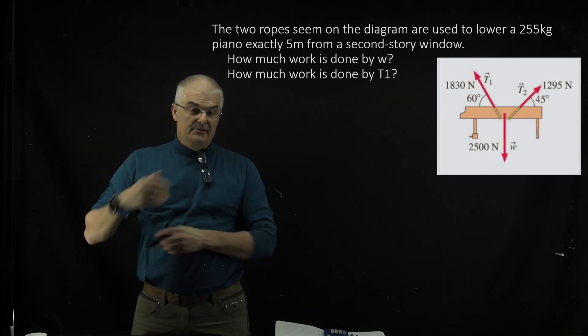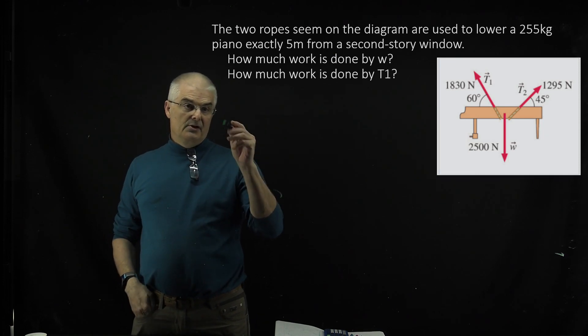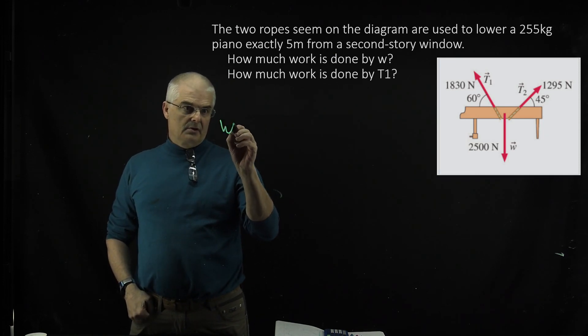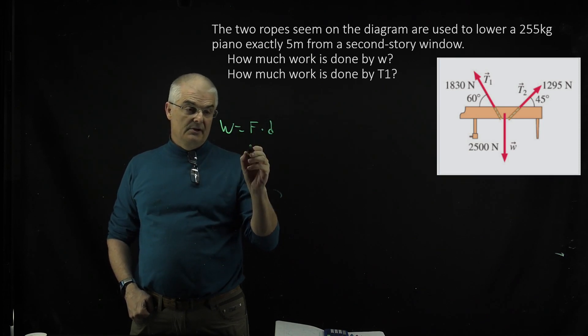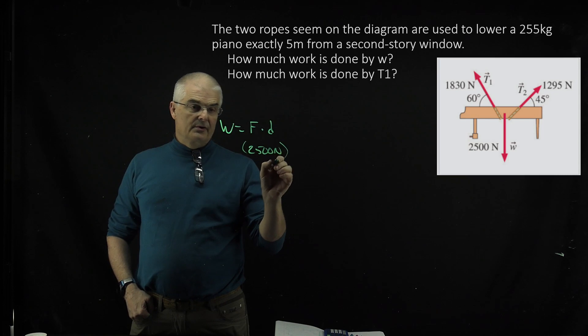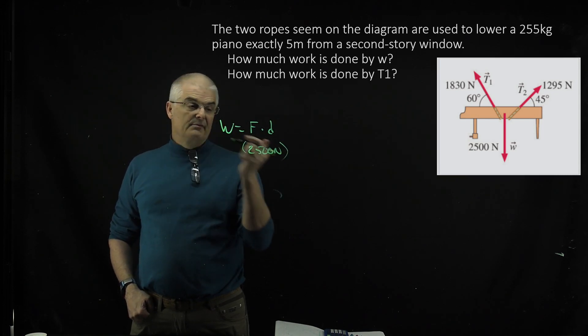So how much work is done by W? W is the weight. Work is force times distance. So the weight of the object, we know, is 2,500 newtons over some distance. What was the distance? Five meters, right?